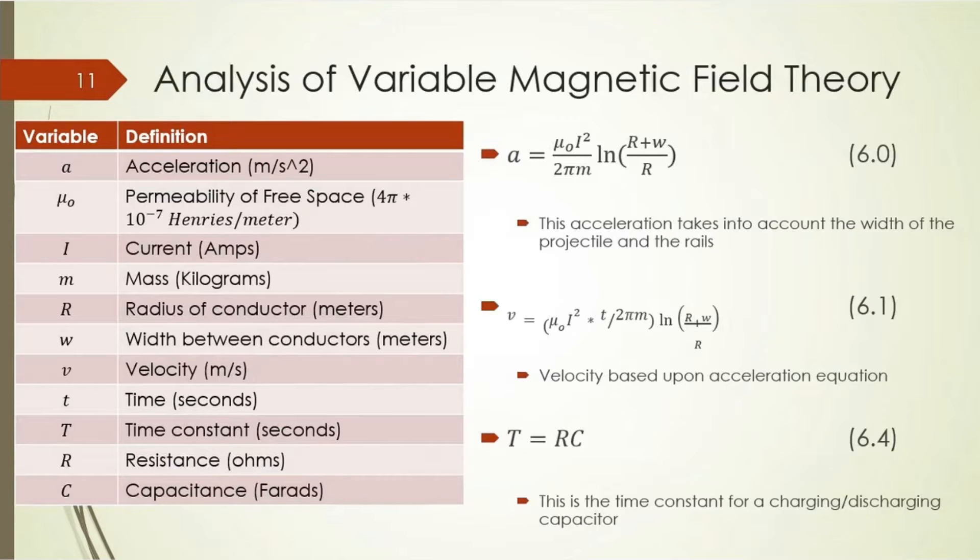Now I looked at the variable magnetic field theory. This first equation 6.1 is the acceleration equation that takes into account the length of the projectile as well as the length of the rails. From this is a velocity equation. And equation 6.4 is a time constant for the capacitor's discharge. The time constant is the resistance of the capacitor - the internal resistance was 4 microhms - times the capacitance, 233 farads. The full discharge would take 4.5 seconds.